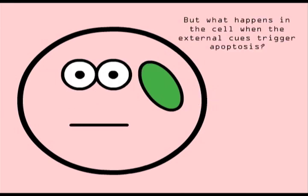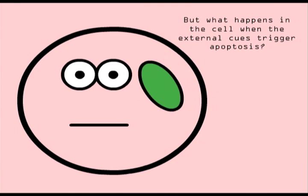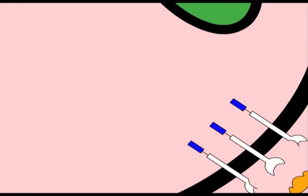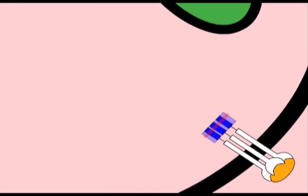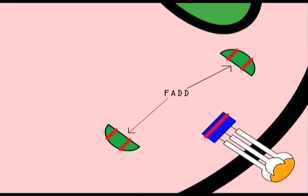But what happens at the cellular level when the external factors cue apoptosis? In the death receptor mediated pathway, the trimeric FAS ligand binds to three FAS receptors. These FAS receptors contain death domain recognition sequences. FADD, which is FAS associated death domain, binds to the death domain, forming an adapter protein.